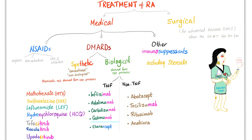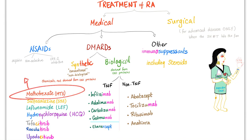Treatment of rheumatoid arthritis is either medical or surgical — surgical only when absolutely necessary. Medical treatment includes NSAIDs, DMARDs, and other immunosuppressants such as steroids, azathioprine, cyclosporine A, and cyclophosphamide. Synthetic DMARDs include methotrexate — the number one drug of choice in the United States. Others include sulfasalazine, leflunomide, hydroxychloroquine, tofacitinib, ruxolitinib, and upadacitinib, which are the small molecule agents. These have all been covered in previous videos.